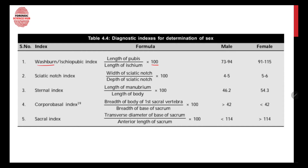First let's talk about the Washburn index, or ischiopubic index. In this index we are going to measure the pubis and ischium — as the name suggests, ischiopubic involves two bones: pubis and ischium. The length of the pubis is divided by the length of the ischium and multiplied by 100. If the number is between 73 to 94, then that is the bone of a male.